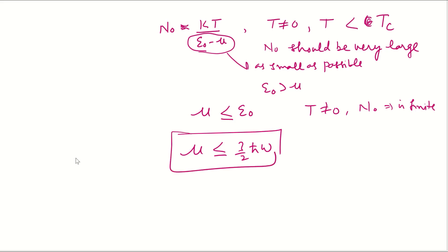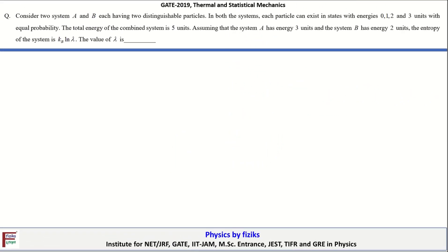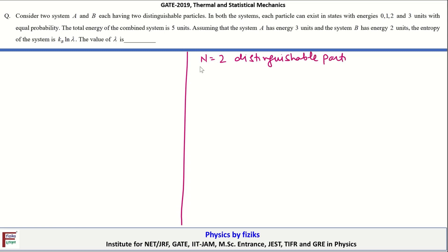That completes the discussion on this question. Let's take a look at the next problem. Consider two systems A and B, each having two distinguishable particles. In both systems, each particle can exist in states with energy 0, 1, 2, or 3 units with equal probability. The total energy of the combined system is 5 units.